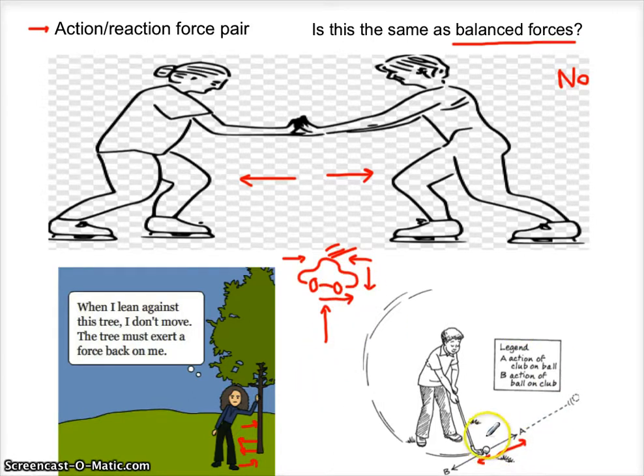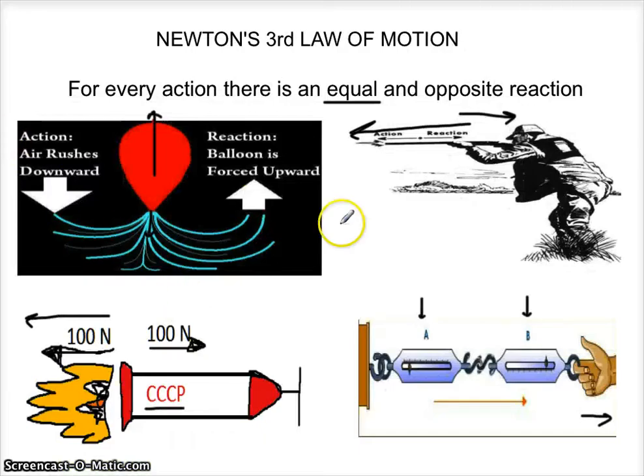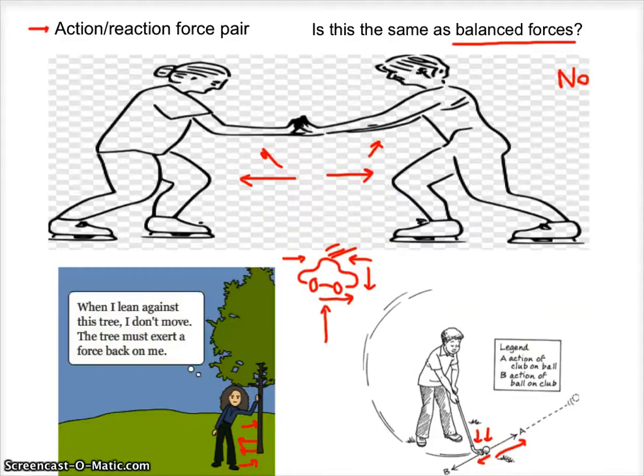You have forces acting on two things. Here, the golf ball, force acting on that, the golf club. Here you have force acting on one skater, force acting on another skater. Here you have force acting on hunter, which is the reaction to the force that's happening going out the bullet, out the end of the gun. And you can do that for all three of these. So don't confuse those.